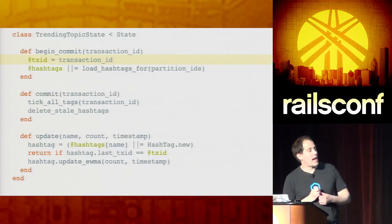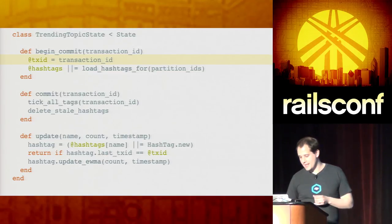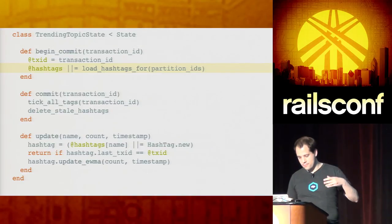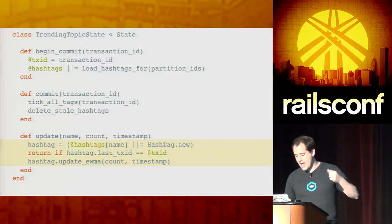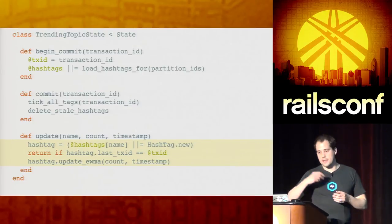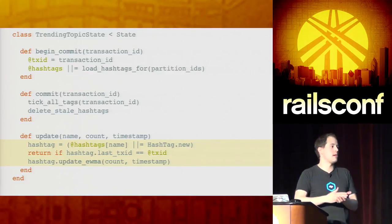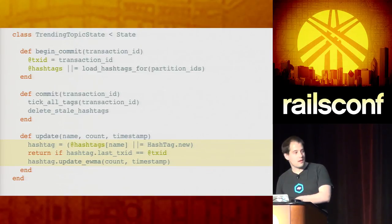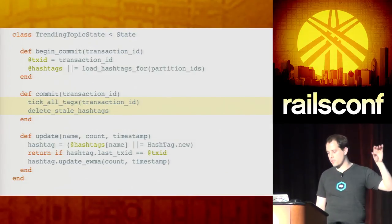We can combine this: in begin_commit we get the transaction ID, store it off, and load up the state. In the update function, we don't actually write to the database anymore — we just store that in memory. The main line is: return if hashtag's last_transaction_id equals transaction_id. What that means is, since we know the guarantees, if a message failed and we reprocess the batch, we can know this hashtag already passed a certain point, so we don't need to re-compute the moving average on it — getting as close as possible to exactly once. Then once commit happens at the end of the batch, we write all the results to the database.